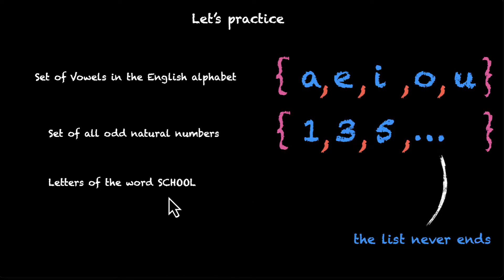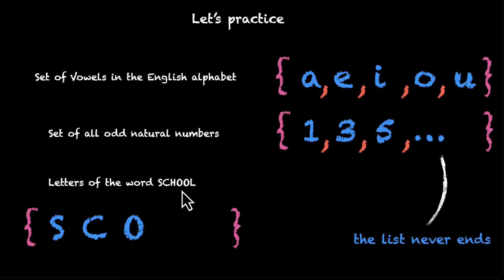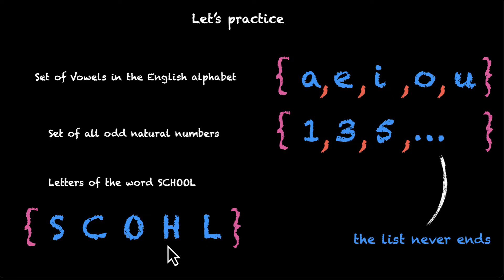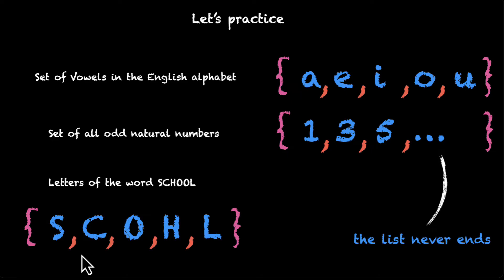Letters of the word 'school' — how do we write that? Again, curly brackets and then the letters: S, C, O — and we only need one O because we don't repeat elements. When we've said that O is part of the set, we don't have to say it again. Then H and L. The order does not matter, so you can have O first, H first, or even L first. That's how you write things in the roster method.